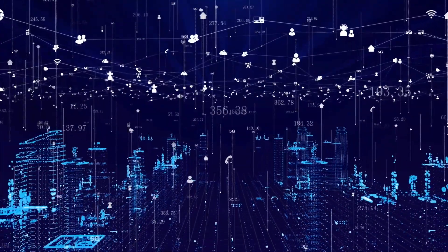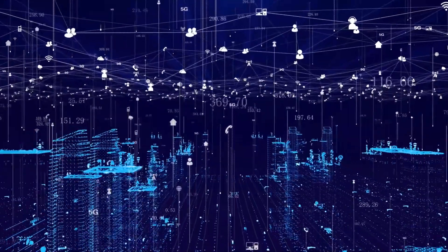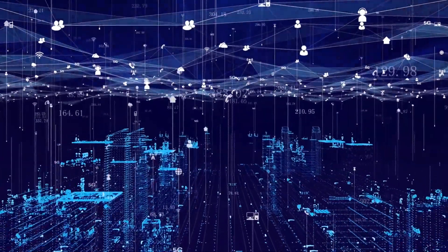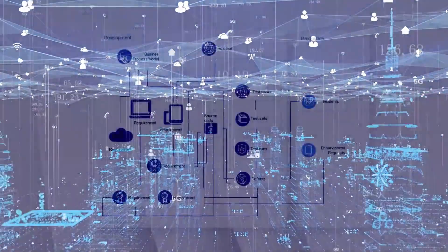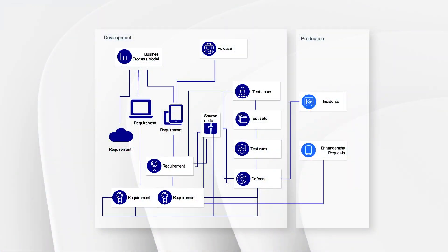Modern software and engineering products are complex systems with interweaved parts. Only complete traceability helps you handle complexity and scale. From small projects to mega projects, ALM Quality Center lets you easily identify related parts whenever there are quality issues.